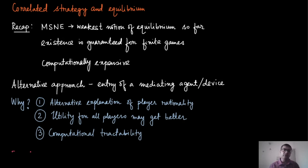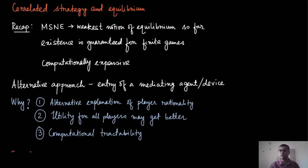That is exactly what we are going to capture using the correlated strategy. This is an alternative approach where we have a mediating device. Rather than collaboratively deciding which game to play, you and your friend toss a coin and decide: if heads, you play football; if tails, you play cricket. You give the whole responsibility of choosing a joint strategy profile to the outcome of that device — that is the idea of correlated strategy.